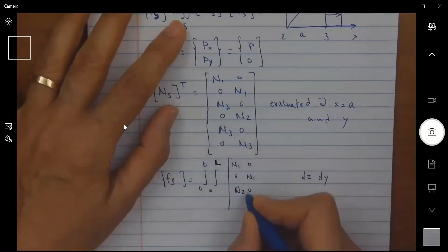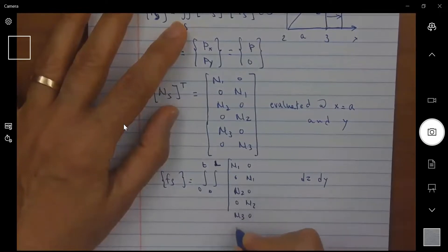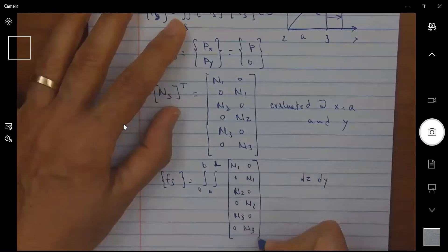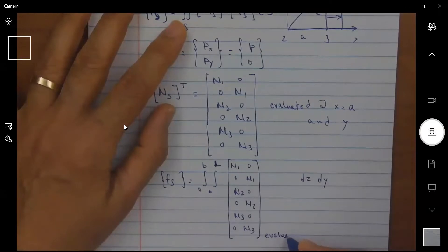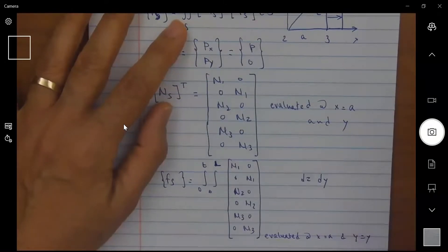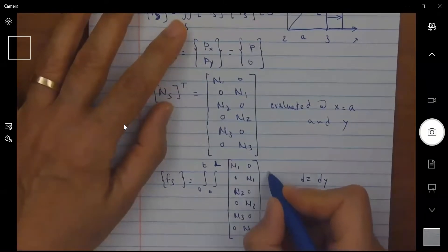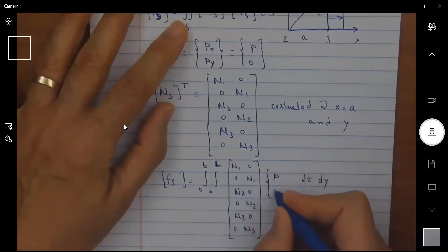And then 0 0 N2, N3 0 and 0 N3. All of these are evaluated at X equal A and Y equal Y, multiply by P and 0.